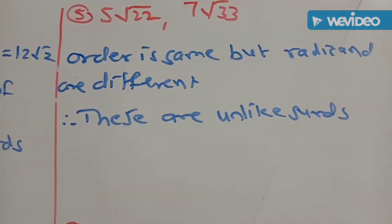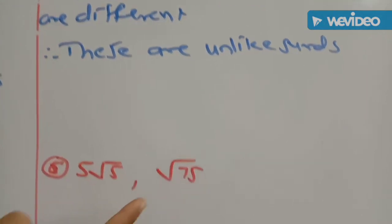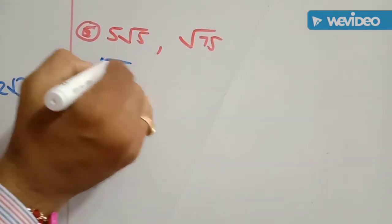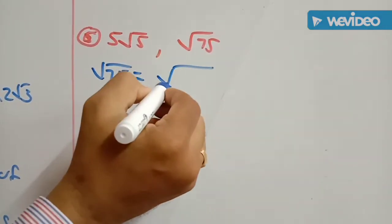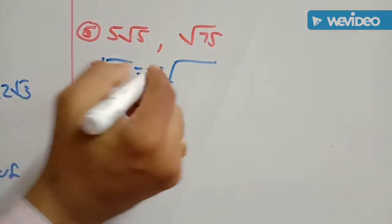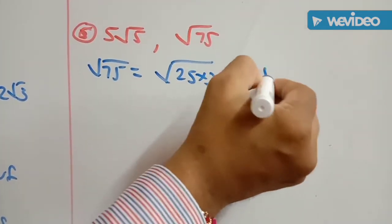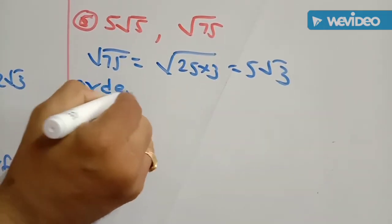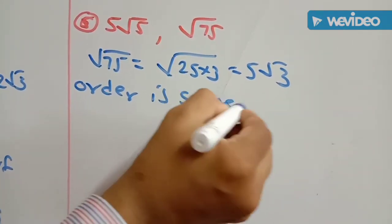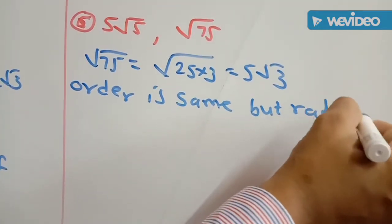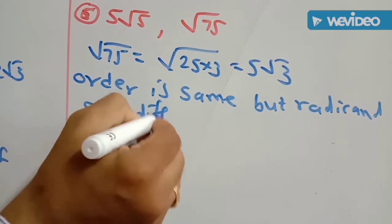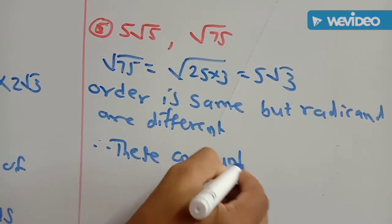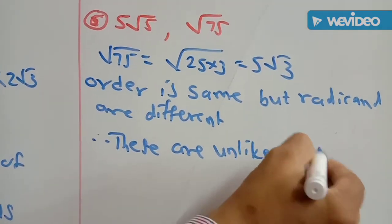Sixth pair: 5 root of 5 and 7 root of 75. Root of 75 can be written as 25 into 3, giving square root of 25 equals 5, so 5 root of 3. Comparing: 5 root of 5 and 5 root of 3 — the order is the same but the radicals are different (5 vs. 3), so these are unlike SIRDs.